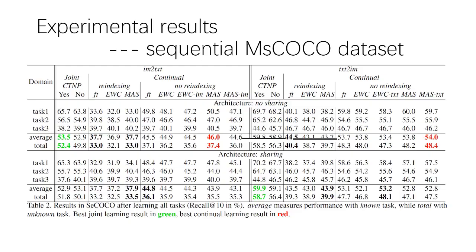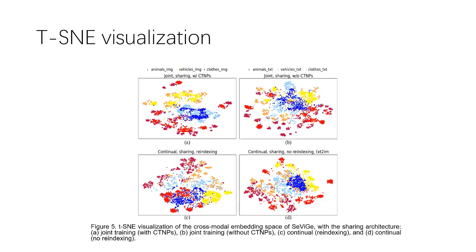Here are TSNE visualizations for our different proposals. You can see that with cross-task negative pairs, the tasks are more discriminated from each other, which is consistent with our intuition.